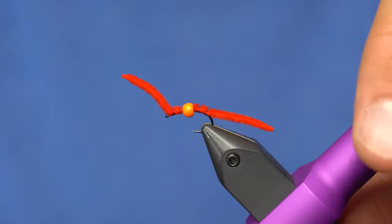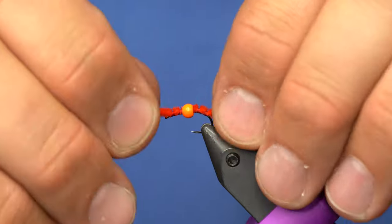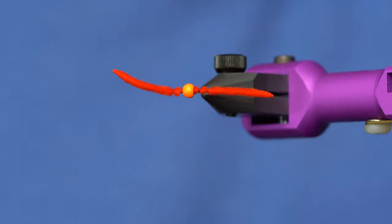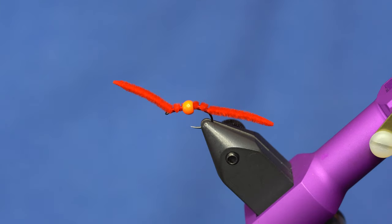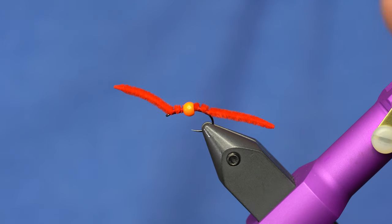So this is designed to be a real simple tie. Worms are typically a fly that you're fishing close to the bottom, so you will break this off, but this is a fly that's actually in the Umpqua catalog, so it must catch fish somewhere.